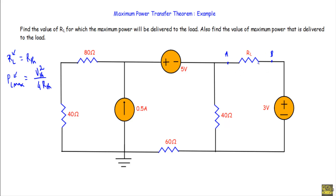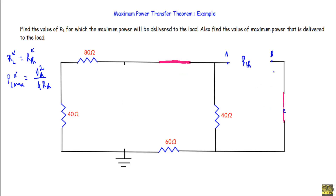To calculate R_th and V_th, we first have to remove the load resistor R_L from the network. If I remove R_L I will get a circuit like this. Now I will calculate R_th within the A and B terminals. When calculating R_th, I will replace each voltage source with a short circuit and each current source with an open circuit.